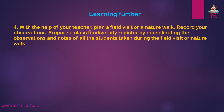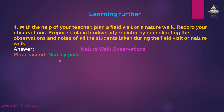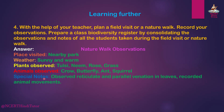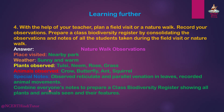Question 4: With the help of your teacher, plan a field visit or a nature walk. Record your observations. Prepare a class biodiversity register by consolidating the observations and notes of all the students taken during the field visit or nature walk. Answer — Nature walk observations: Place visited: nearby park. Weather: sunny and warm. Plants observed: Tulsi, Neem, Rose, Grass. Animals observed: Crow, Butterfly, and Squirrel. Special notes: observed reticulate and parallel venation in leaves, recorded animal movements. Combine everyone's notes to prepare a class biodiversity register showing all plants and animals seen and their features.